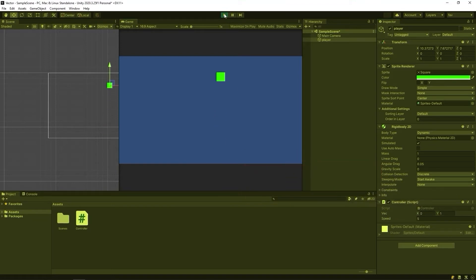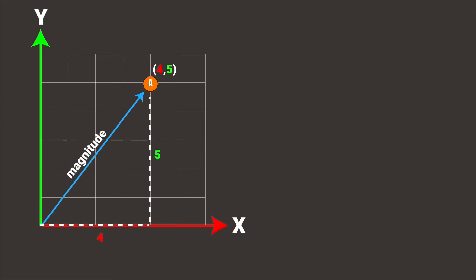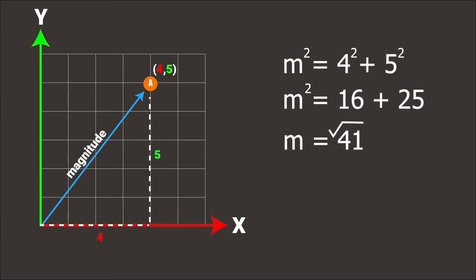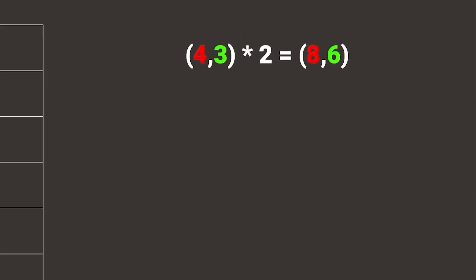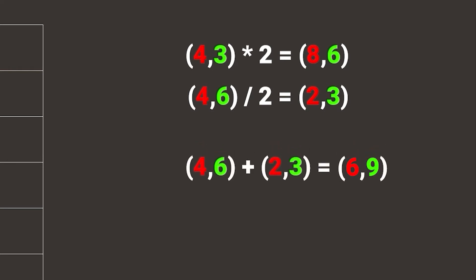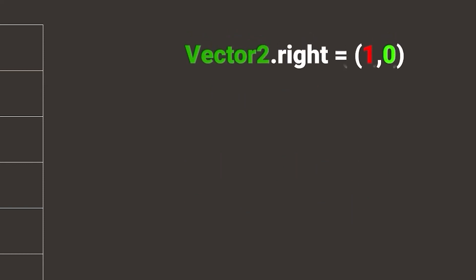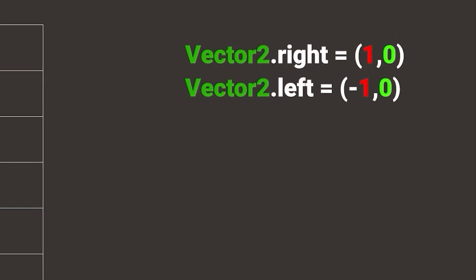Let's go back to vectors. Magnitude is the length of the vector, and it's calculated like this. You can reach some vectors using shortcuts.